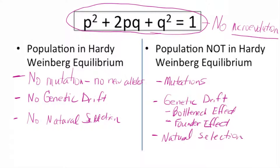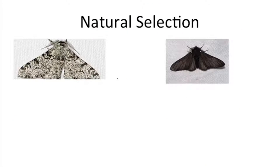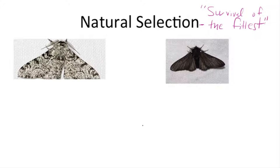Natural selection essentially refers to 'survival of the fittest,' which is somewhat true. For an organism to be 'fit,' it would survive long enough to reach reproductive age and have reproductive success — meaning it passes on its alleles to the next generation. If some organisms have better survivability and therefore can pass on their alleles, they are considered fitter organisms because they are contributing alleles to the next generation.